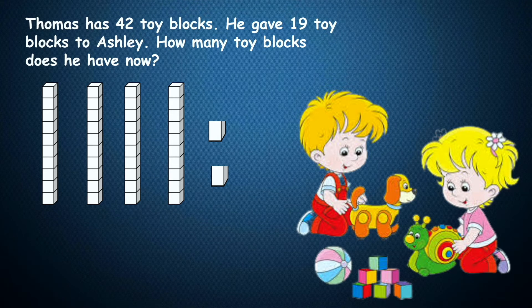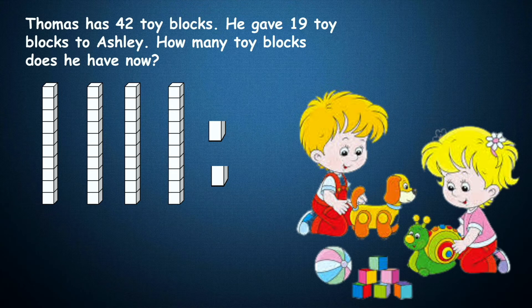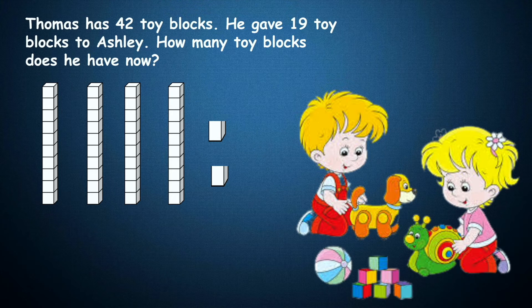Now he gave 19 toy blocks to Ashley. But let's take a look at our ones side. We only have two ones here. We can't take out nine ones out of two ones. So what do we need to do? We need to regroup.